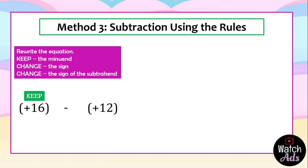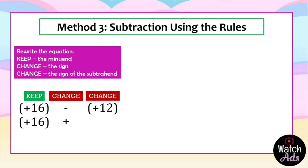How do we do this? First, we keep the minuend — 16 stays as 16. Then we change the sign: minus becomes plus. The next thing is to change the sign of the subtrahend. The subtrahend is 12, the sign is positive, we change it into negative, so we have negative 12.